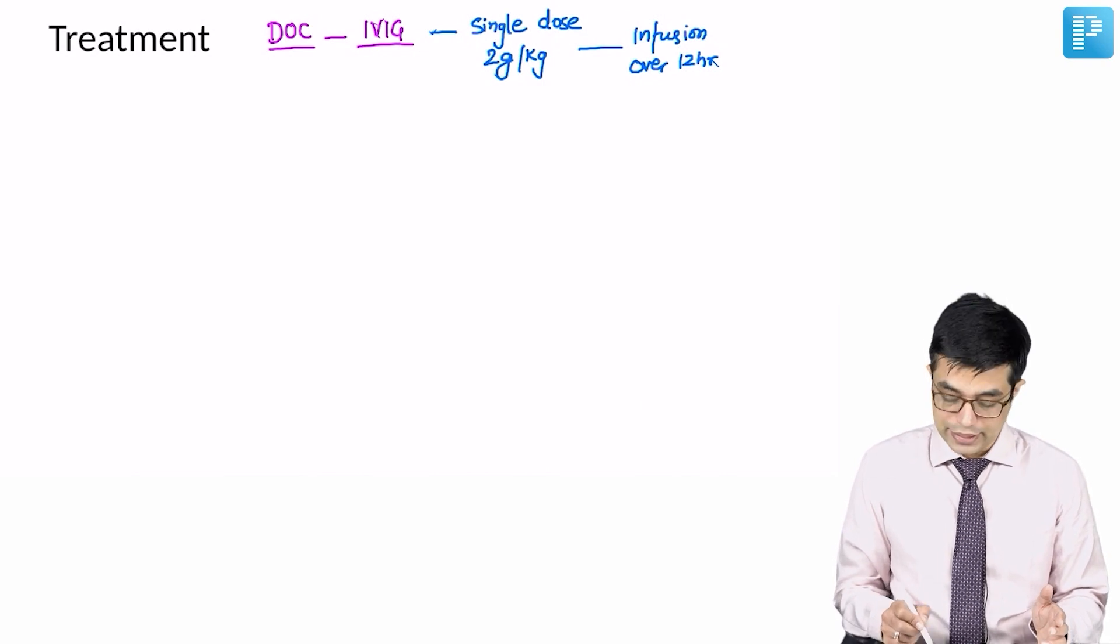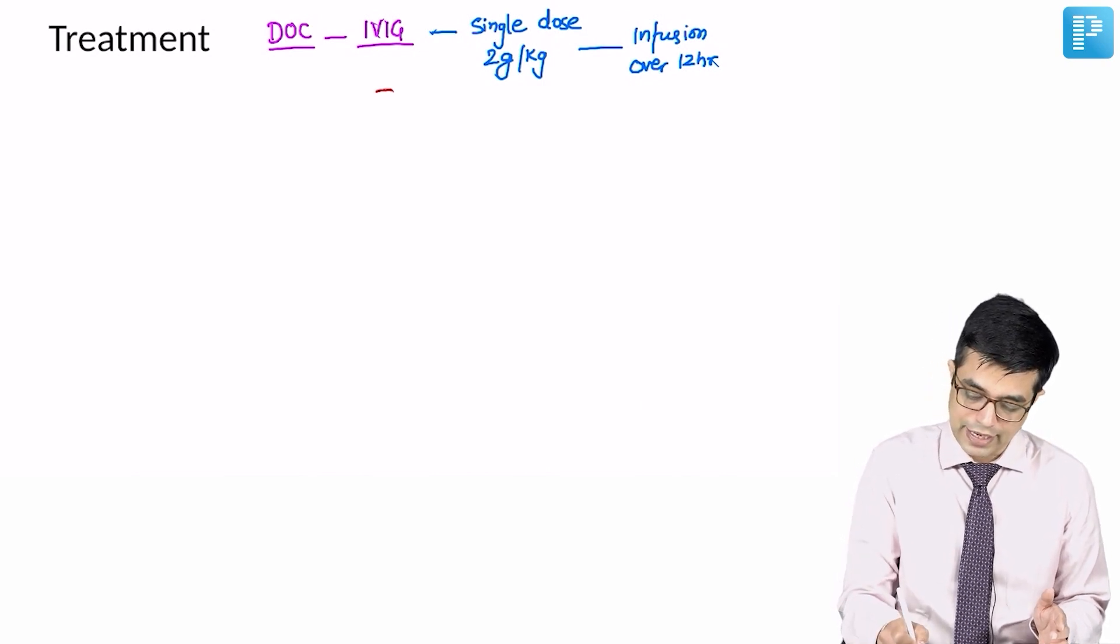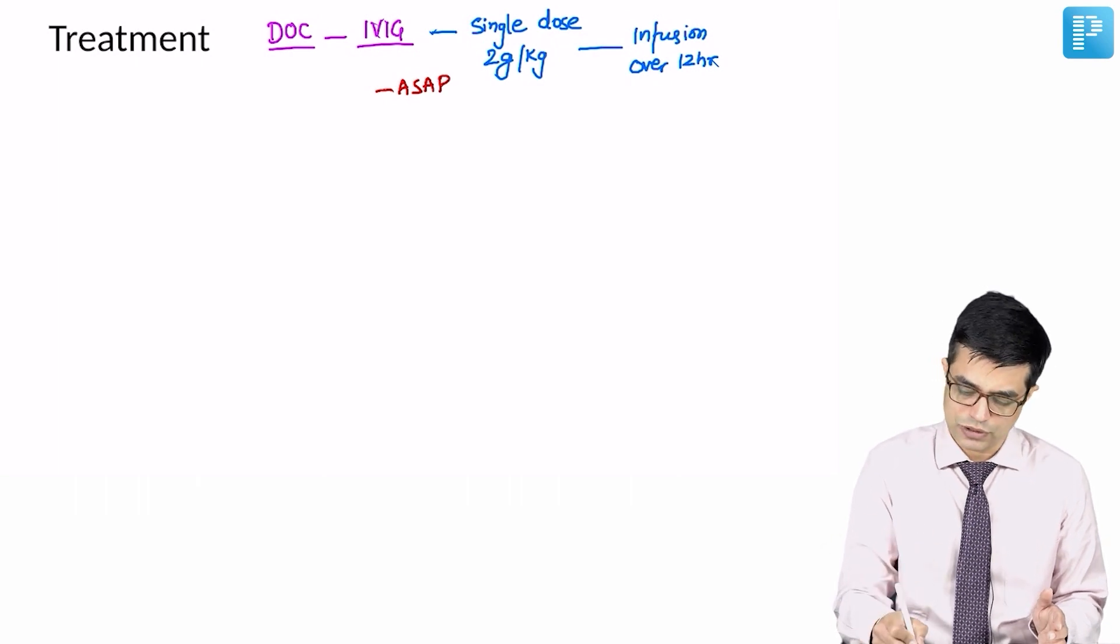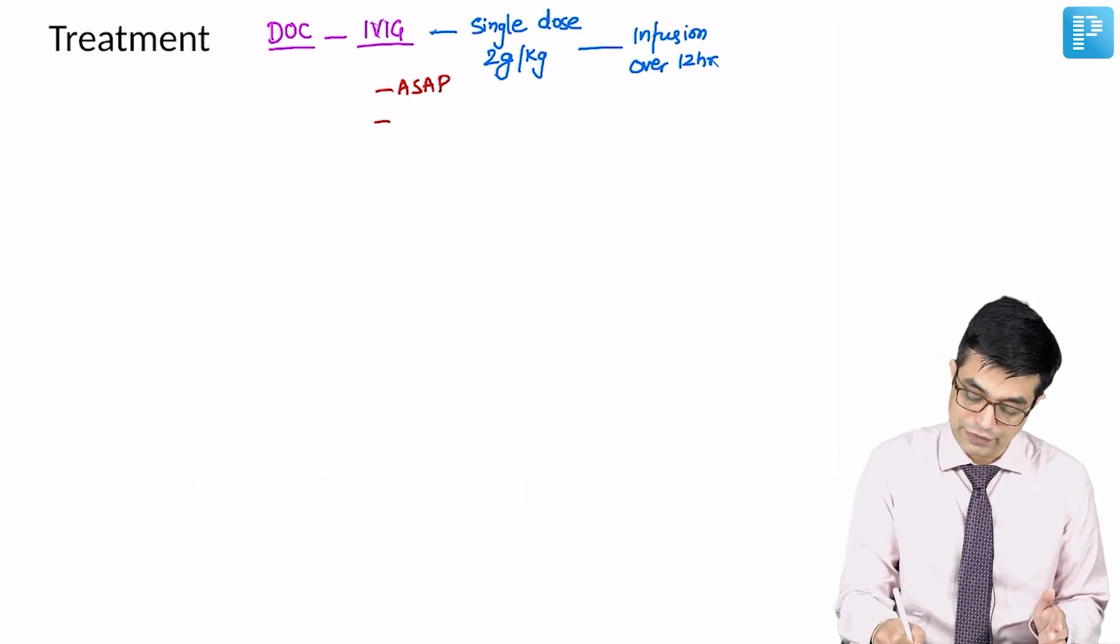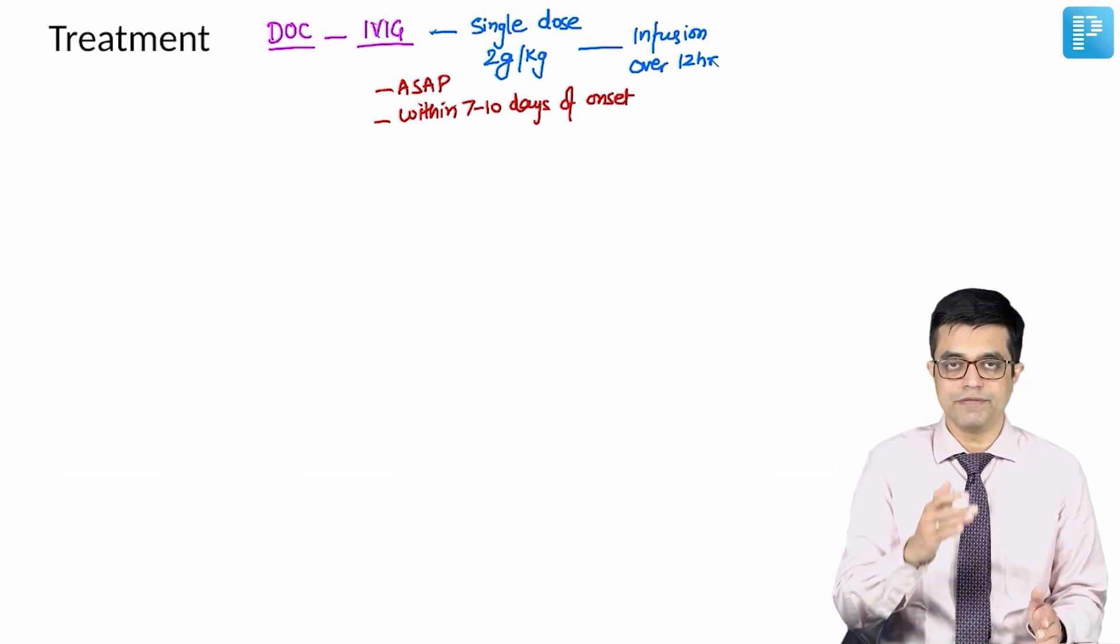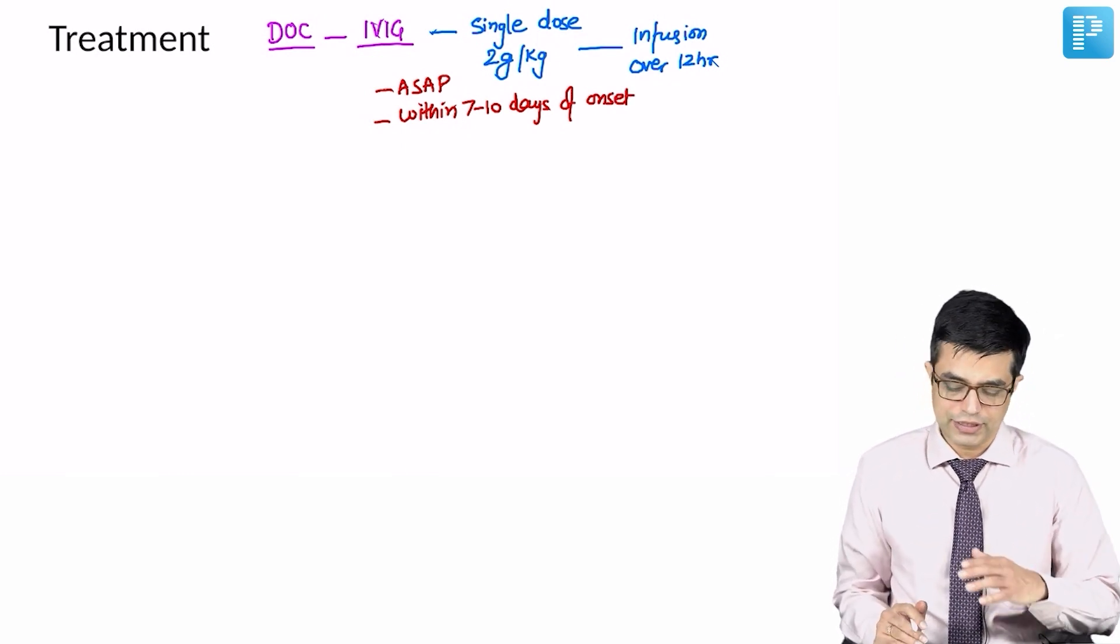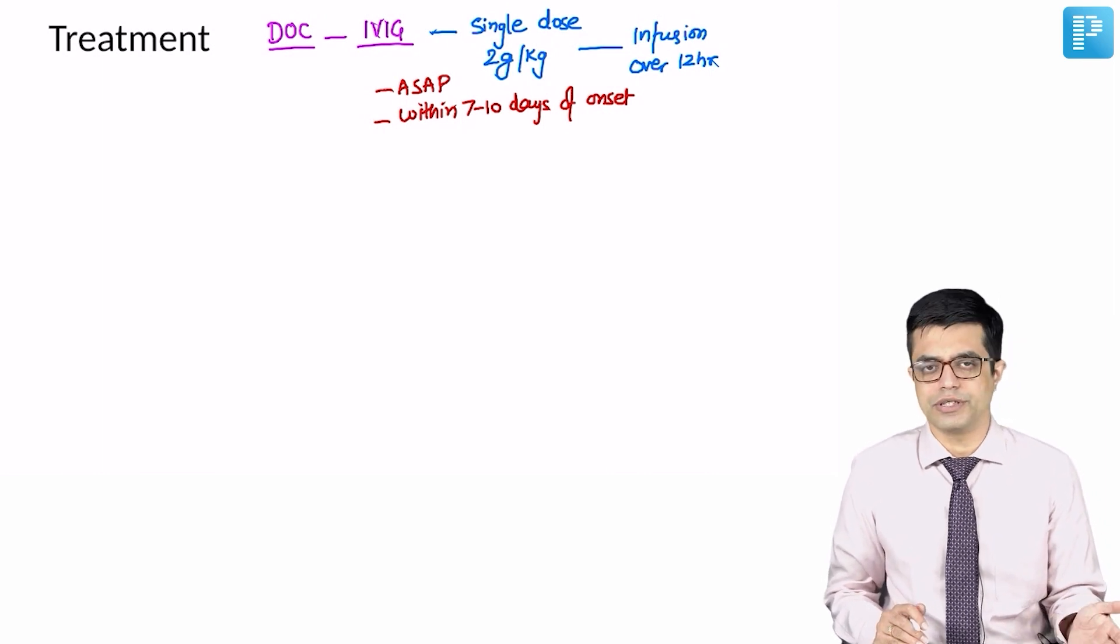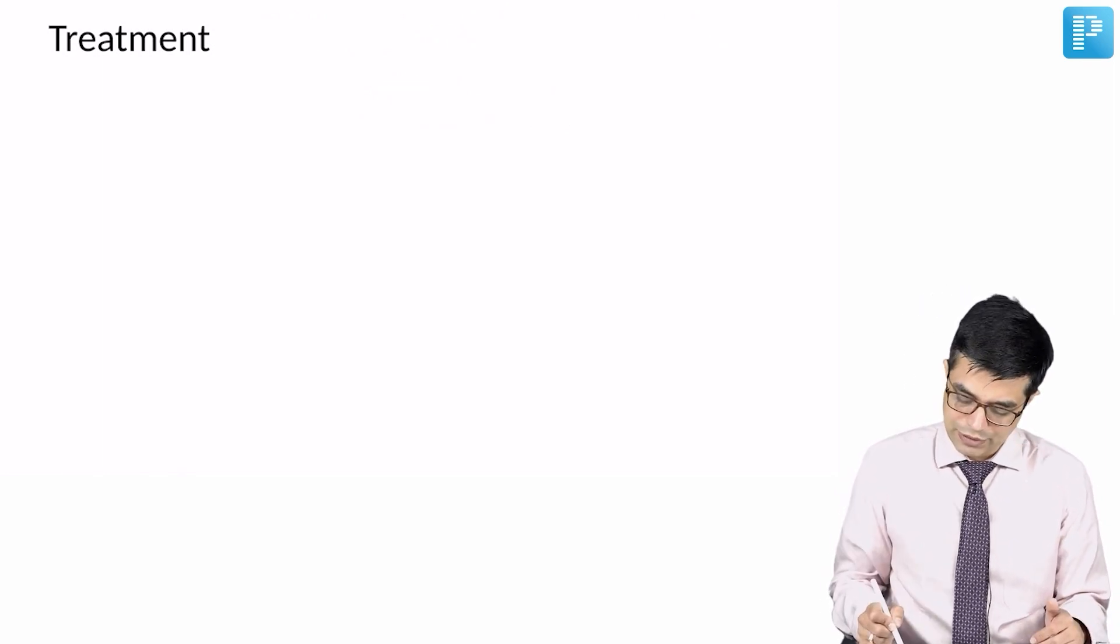When should you give IVIG? Ideally it should be given as early as possible. So, I am writing ASAP. ASAP simply means as soon as possible and practically it should be given within 7 to 10 days of disease onset. Fever onset, then only we say it is onset of the disease. So, within 7 to 10 days of onset of disease or onset of fever. It can be useful.